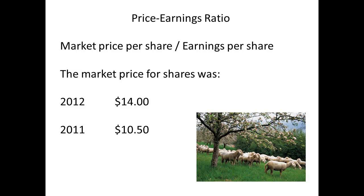The next ratio is the price-earnings ratio. To determine this ratio, we need an additional piece of information — that is the market price per share. This can be obtained from listings from the stock exchanges. The date for the market price should be the date of the balance sheet. In this case, it was the last day of the calendar year. For 2012, it was $14, and for 2011, it was $10.50.